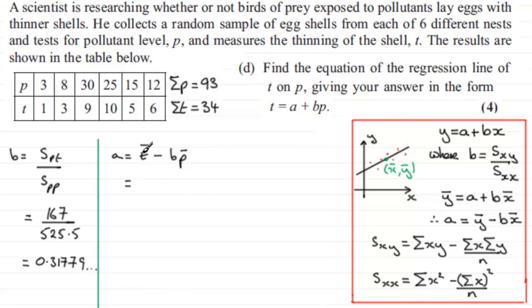And to get the mean of t, we just need to add up all our values for t, which came to 34, and divide that by how many values we've got, which is 6. So the mean t is going to be 34 over 6. We've got b, b was this value here, so we've got 0.31779, and so on. And we multiply that by the mean of p, which would be sigma p, the sum of all our p values, 93 then, divided by how many we've got, which is 6. And when you work this out, you end up with 0.7408, and so on.